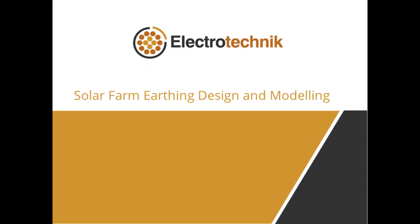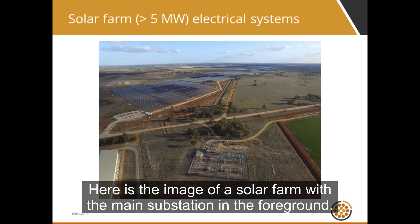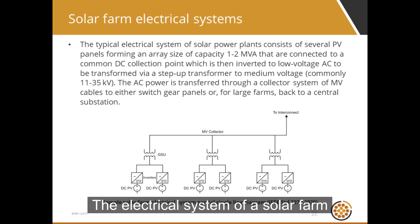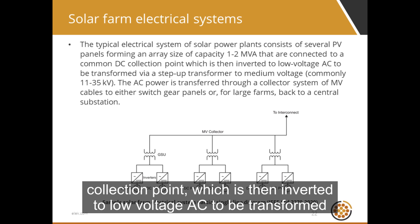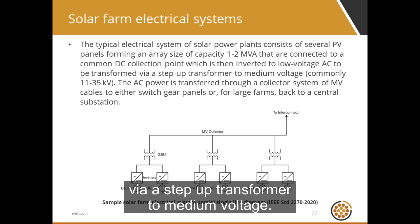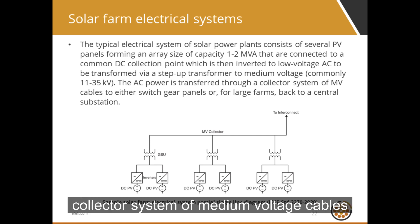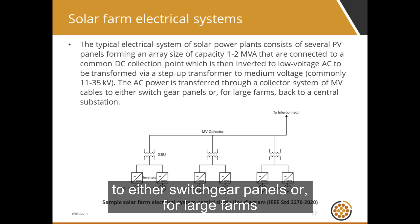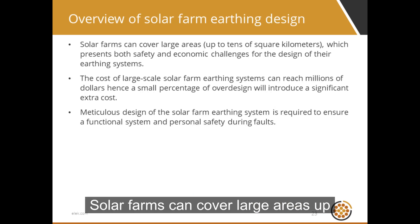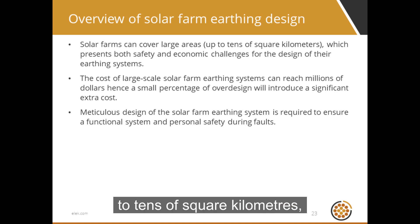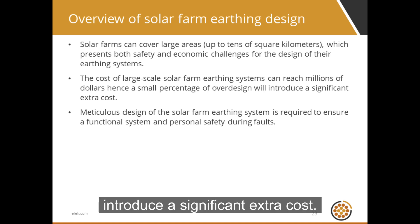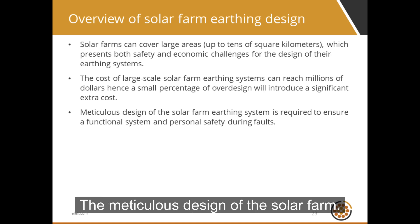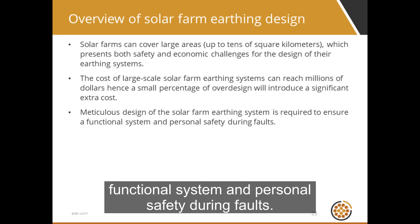Next, we will explain how to design and model earthing systems for large solar farms. Here is an image of a solar farm with the main substation in the foreground. The electrical system of a solar farm consists of several PV panels forming an array connected to a common DC collection point, which is then inverted to low-voltage AC and transformed via a step-up transformer to medium voltage. The AC power is transferred through a collector system of medium voltage cables to either switchgear panels or, for large farms, back to a central substation. Solar farms can cover large areas up to tens of square kilometers, presenting both safety and economic challenges. The cost of large-scale solar farm earthing systems can reach millions of dollars, so meticulous design is required to ensure a functional system and personal safety during faults.